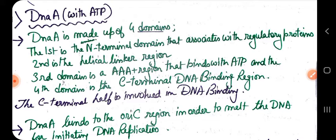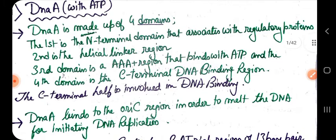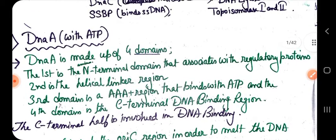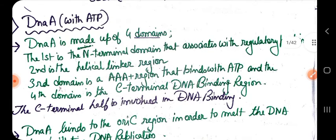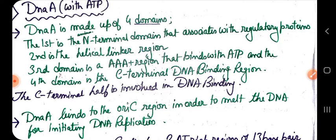The first domain of DnaA is the amino terminal domain, which is associated with regulatory proteins for the replication process. The second is the helical linker domain. The third domain is the AAA+ region, which binds with ATP — this domain allows DnaA to carry out its unwinding function. The fourth domain is the C-terminal DNA-binding region.